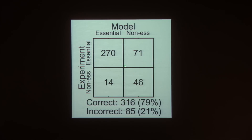There are 71 cases where the model predicts genes are non-essential but the experiment shows them to be essential. Those are generally genes where we know a little bit about them but not very much — it's a very coarse-grained, worse description. Many groups have done qualitative predictions of knockout phenotypes. But we wanted to take this a step further and do something no one's done before: look at all these phenotypes quantitatively, to measure quantitative growth rates. And so we did that.